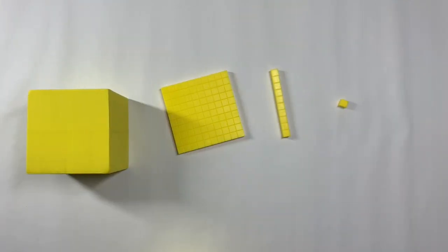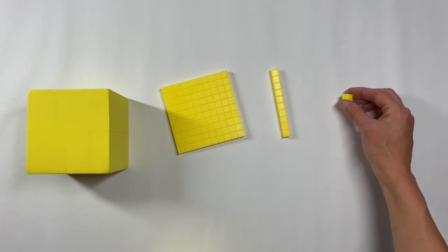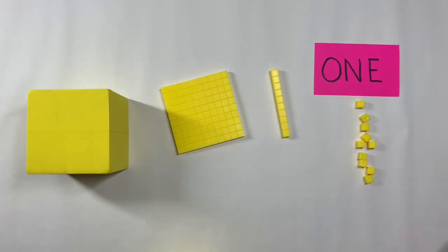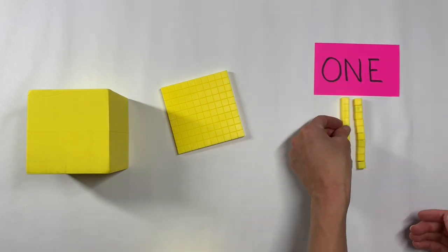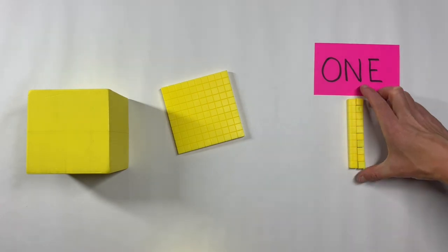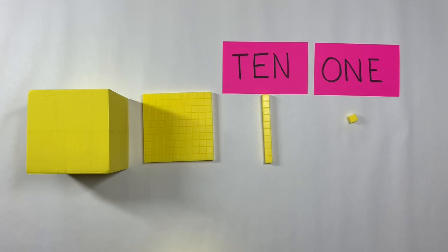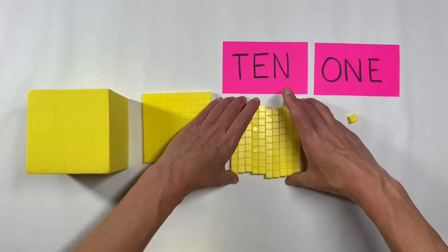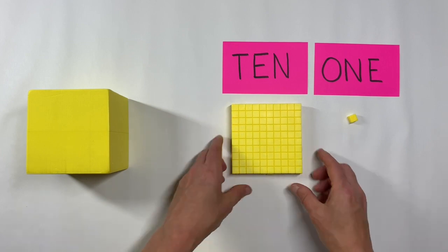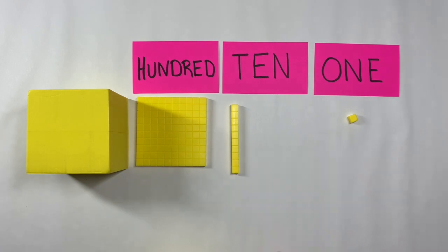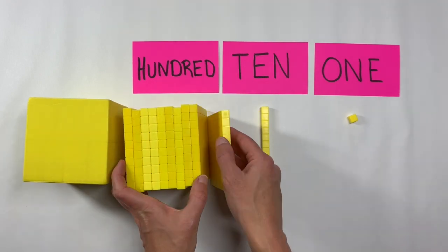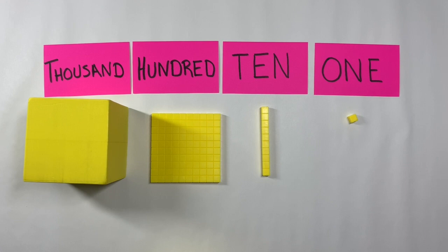Prior to fourth grade, students have hopefully explored place value relationships using base ten blocks. They should be familiar with the pieces and their relationships: ten unit cubes can be regrouped into a tens rod, ten tens rods match up with a hundreds flat, and ten hundreds can be regrouped for a thousands large cube. All of that should be familiar to students entering fourth grade.